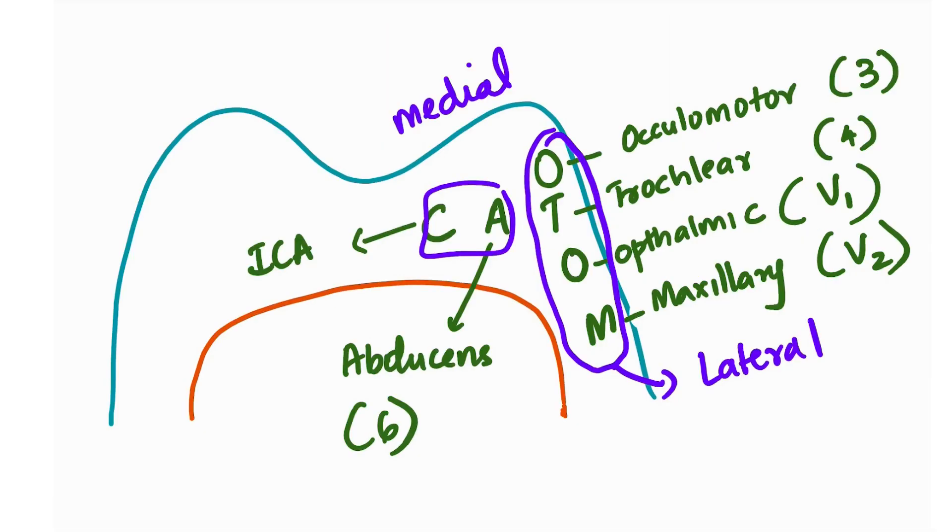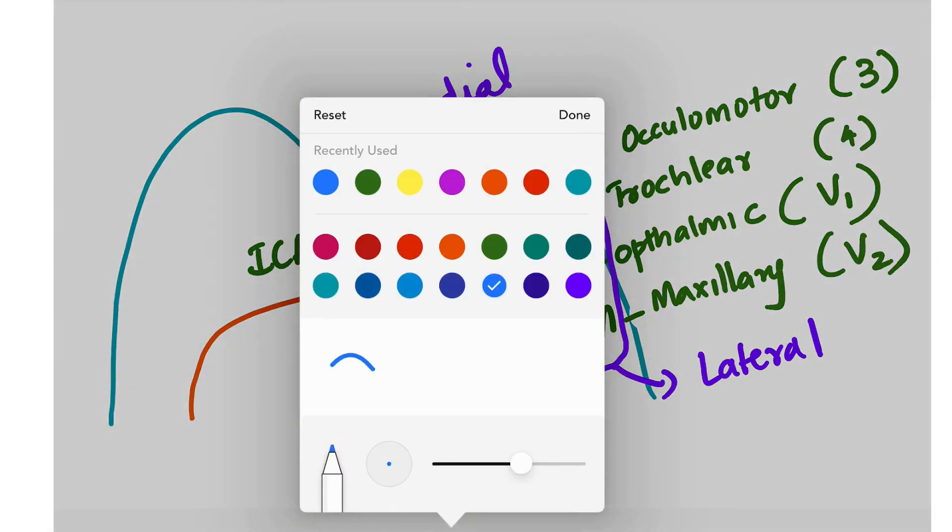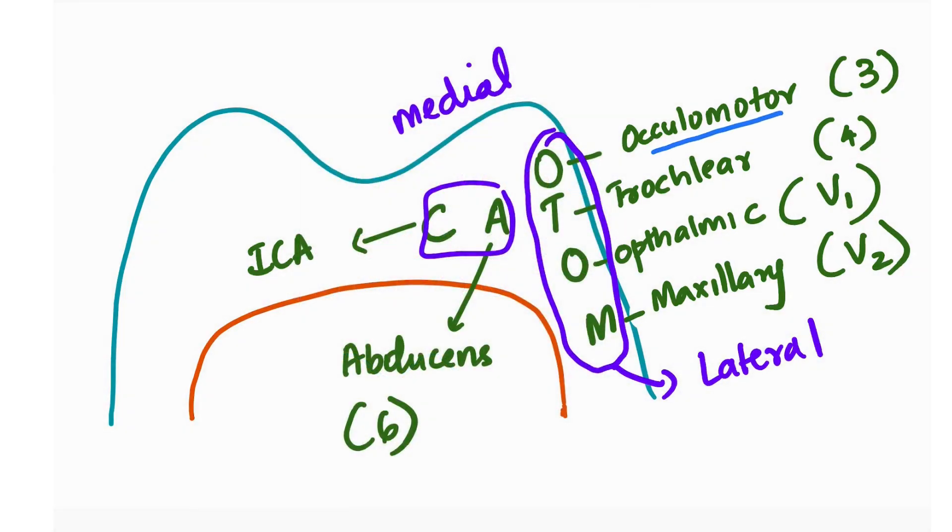Now we need to see what this O Tom Cat stands for. O stands for oculomotor, oculomotor, which is the cranial nerve number three. T for trochlear, number four, cranial nerve number four. O for ophthalmic, trigeminal nerve's first branch, that is V1. Maxillary, M for maxillary, trigeminal nerve's two, V2, V2. So these are on the lateral side.